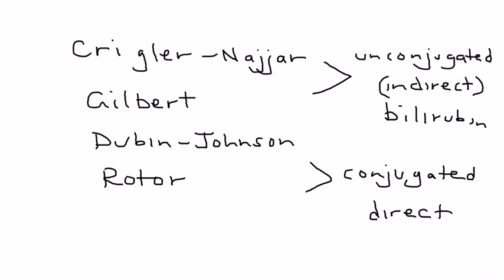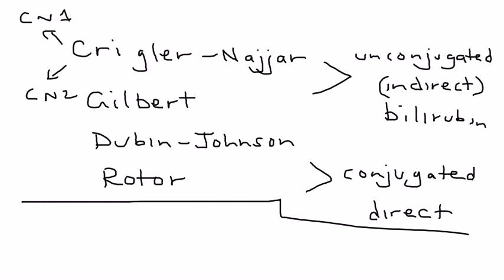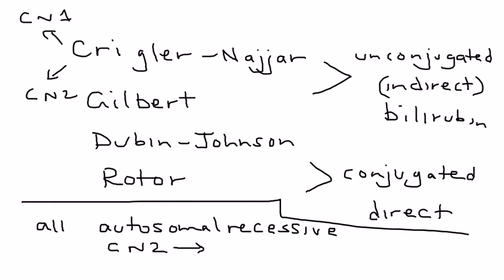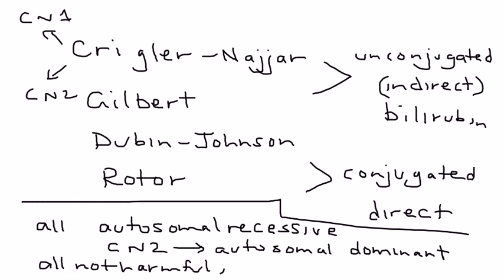Krigler-Najjar has two types: Krigler-Najjar 1 and Krigler-Najjar 2. A common trend is that all of these disorders are autosomal recessive, with the exception of Krigler-Najjar 2, which is autosomal dominant. Additionally, all of these are essentially not harmful, with the exception of Krigler-Najjar 1, which is fatal, usually in the neonatal period.